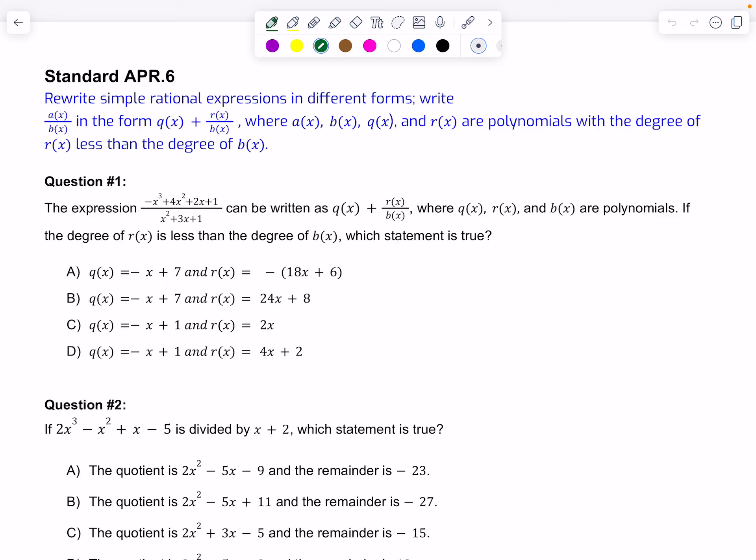Let's take a look at standard APR.6. This standard says that we should be able to rewrite simple rational expressions in different forms.